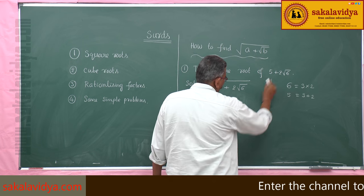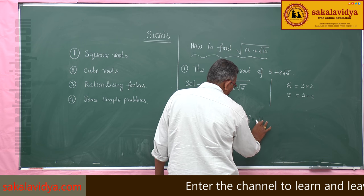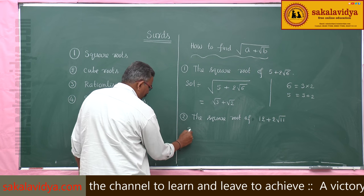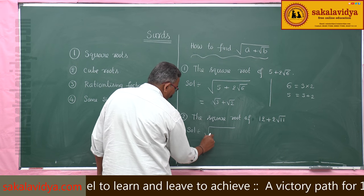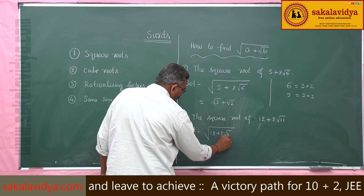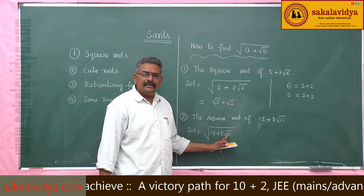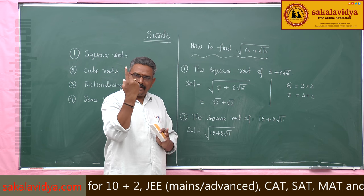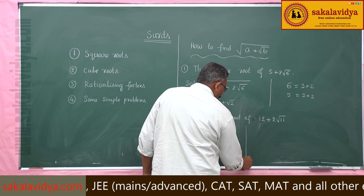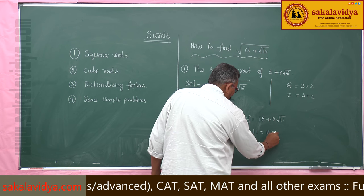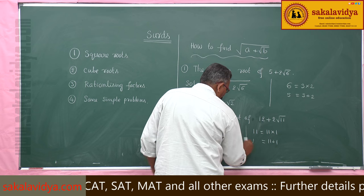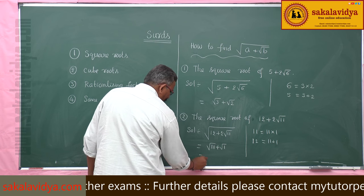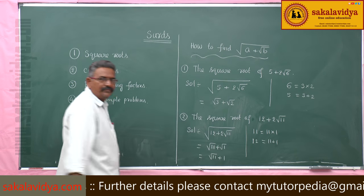Next, let us find the square root of 12 + 2√11. Now 11 is a prime number. The only factors of 11 are 1 and 11. So 11 can be written as 11 × 1. Then 11 + 1 = 12, which matches. So the answer is √11 + √1, and since √1 = 1, the answer is √11 + 1.